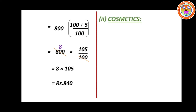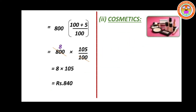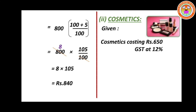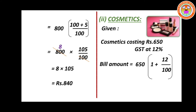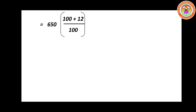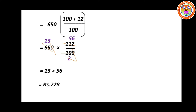Now cosmetics. The cosmetic costing is Rs.650 and GST is 12%. Bill amount equals 650 into (1 plus 12 divided by 100), which is 650 into 112 divided by 100. You can cancel 10 and 10, then cancel 10 and 65 in the 5 table — giving 13. Then cancel 2 and 112 — 56 times. So multiply 13 into 56. Your answer is Rs.728. So the cosmetic bill is Rs.728.